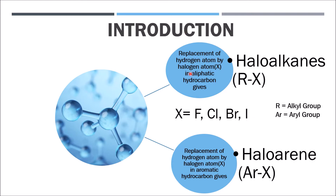Replacement of a hydrogen atom by a halogen atom in aliphatic hydrocarbons gives us haloalkanes, represented by the formula RX. When we replace one or more hydrogen atoms of the benzene ring by a halo group, we get the haloarene, represented by the formula ArX, where R is the alkyl group and Ar is the aryl group.